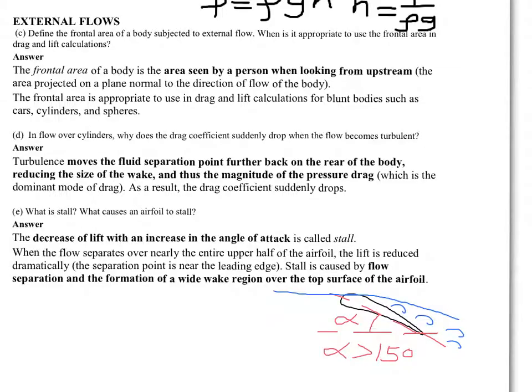As you can see from the little sketch that I've drawn, for an angle of attack usually greater than 15 degrees, there is flow separation at the leading edge as the fluid is unable to follow the geometry of the airfoil, and there is this separation point here.